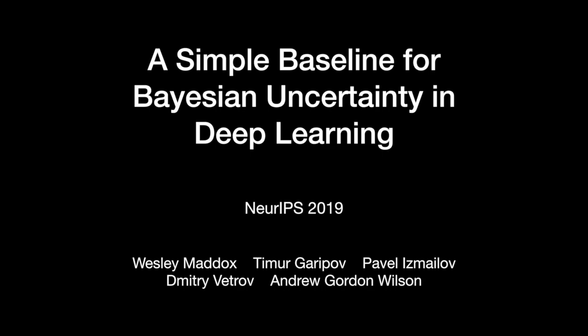This is a short presentation on our new paper, A Simple Baseline for Bayesian Uncertainty in Deep Learning, appearing at NeurIPS 2019. I am Pavel Ismailov, and this is joint work with Timur Garipov, Wesley Maddox, Dmitry Vetrov, and Andrew Gordon Wilson.